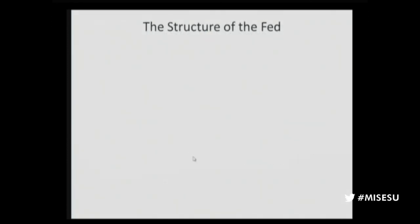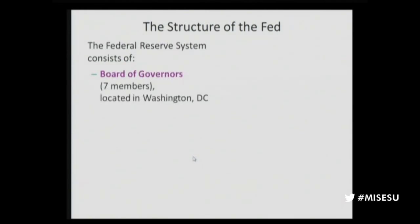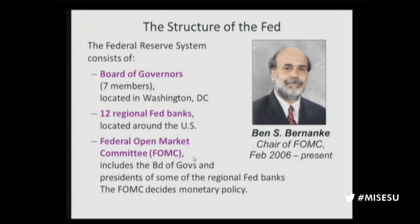The Federal Reserve, or the Fed, is the central bank of the U.S. The Federal Reserve System consists of the Board of Governors — seven members appointed by the President for 14-year terms, located in Washington D.C. — and 12 regional Fed banks located around the country. The Federal Open Market Committee has the real power: all seven Board of Governors plus the presidents of five regional reserve banks, with the New York Fed president always on the committee. The other banks rotate. They decide monetary policy and meet every six weeks for two days, then issue a completely incomprehensible two-line press release and release the minutes months later.